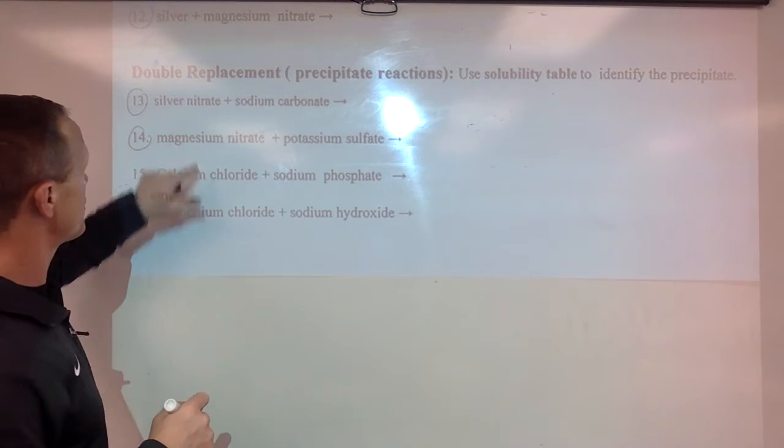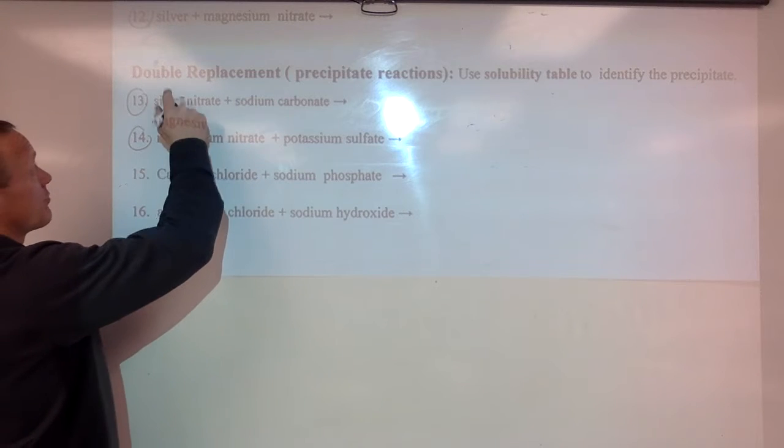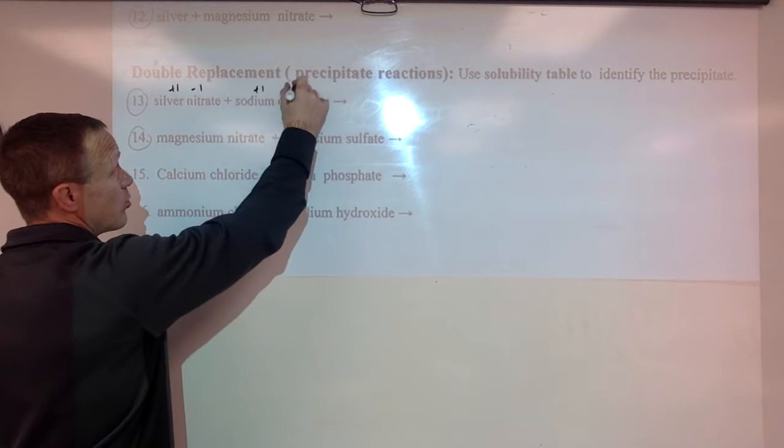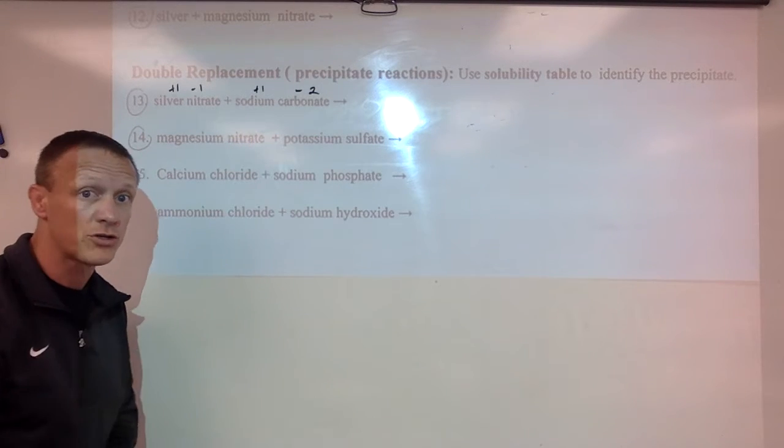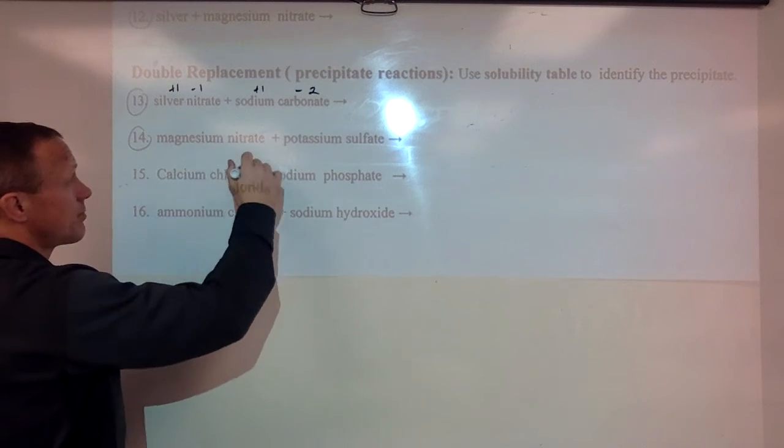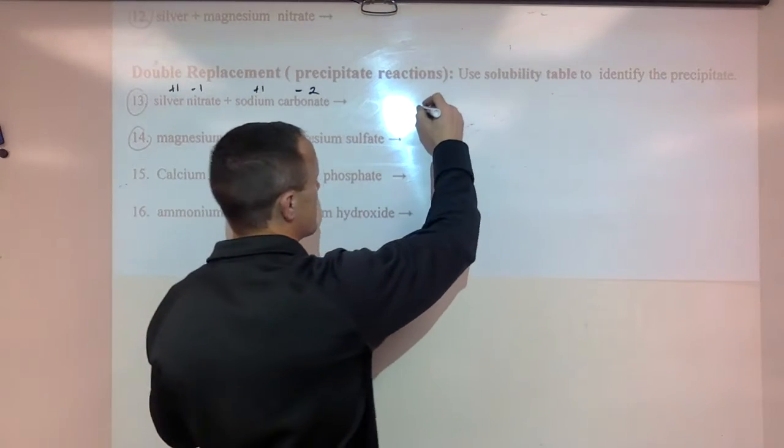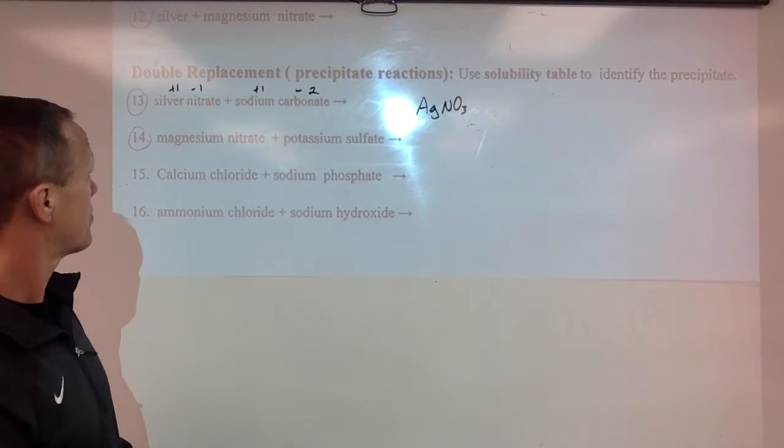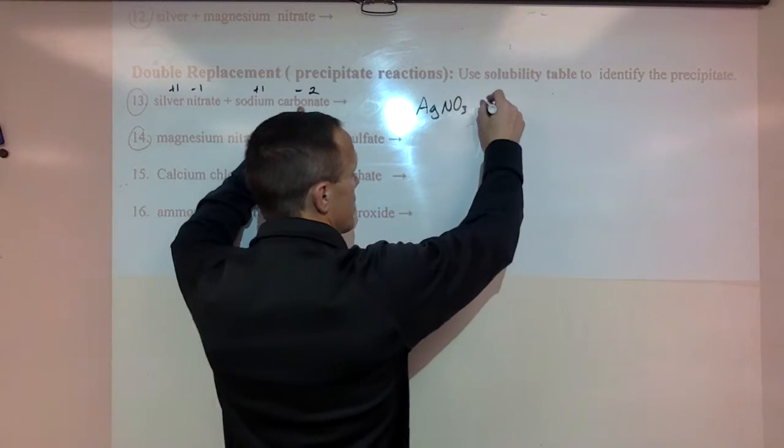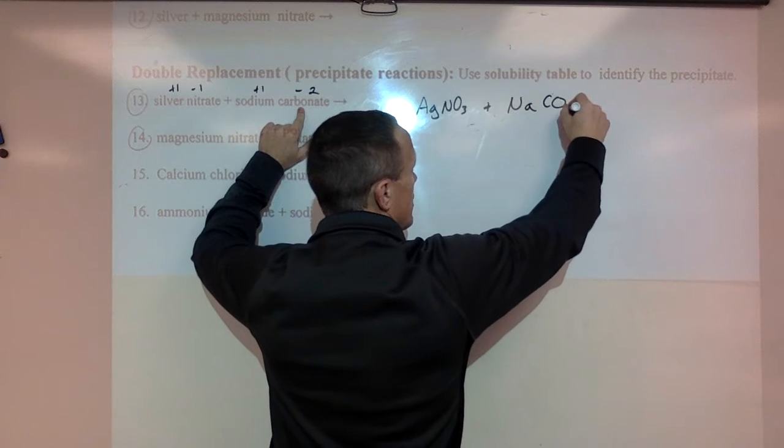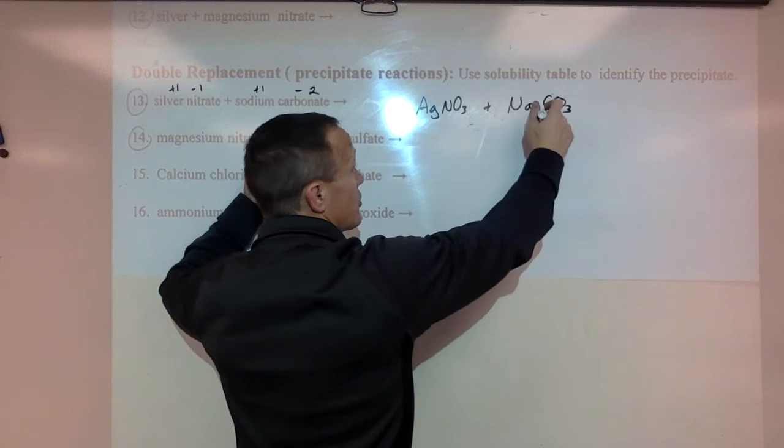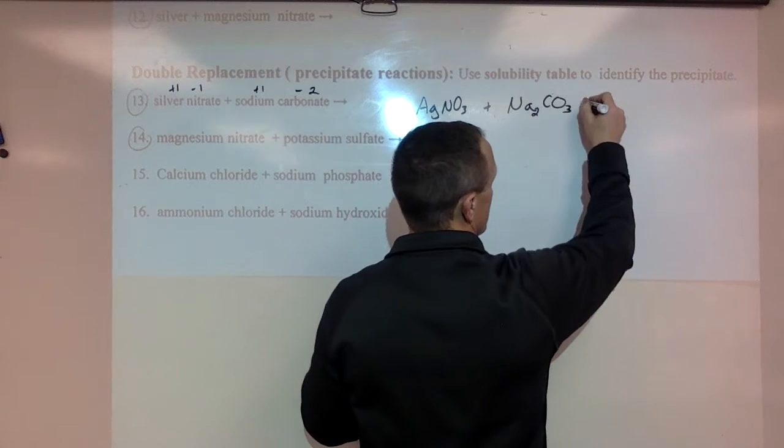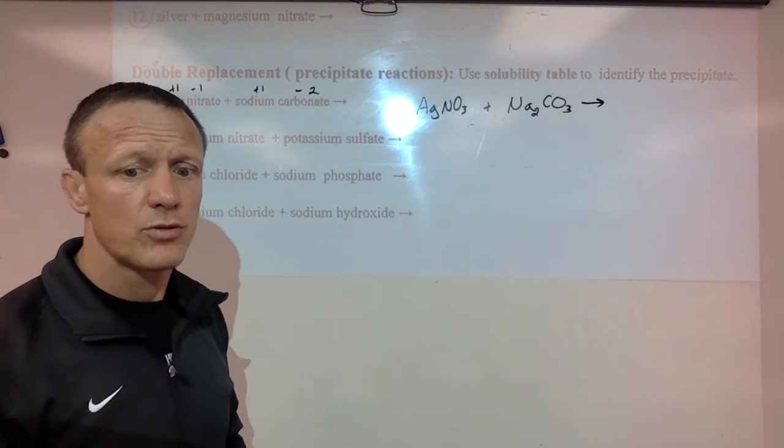So I'll do these two here. So silver nitrate which is a plus one and a minus one charge with sodium carbonate which is a plus one and a minus two charge. So you're going to need to know all your charges for these. I'm going to write this over here. So we got silver nitrate AgNO3 plus sodium carbonate. Sodium carbonate plus one minus two so we need to put a two with the sodium.